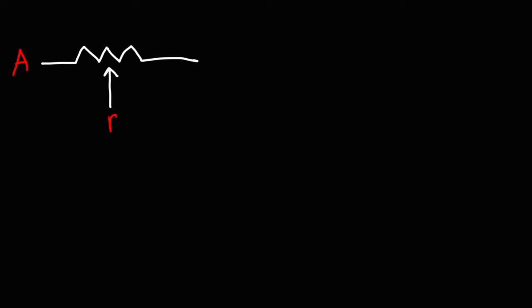Here we have the electrical symbol of a potentiometer, or a variable resistor. This is point A, point B, and point C. Now let's say we have a 50 kilo ohm potentiometer. What you need to know is that the resistance between points A and C is the value of the potentiometer — it's 50 kilo ohms.